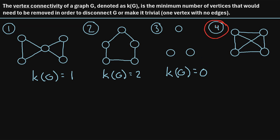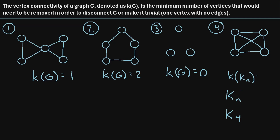Now let's check out our last example, graph number four. Here we have what's called a complete graph — a type of graph where every vertex is directly connected to every other vertex by an edge. A complete graph is written as K sub n, where n is the number of vertices. This particular graph is K sub 4. For a complete graph with n vertices, the vertex connectivity is always equal to n minus one.